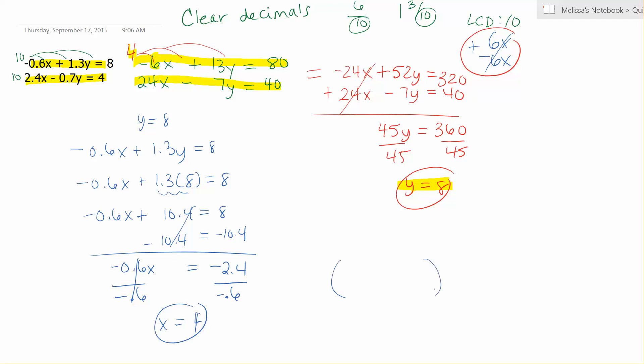This tells me that these two equations, which are lines, have a point where they intersect. The point of intersection is the solution. Here, the solution is the ordered pair (4, 8). You always use alphabetical order for your values. Anytime you have systems of equations with decimals, your approach should be to clear those decimals first.